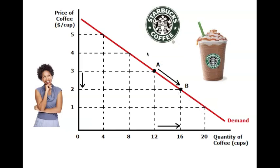To say that again: if everything remains the same in her life — her income remains the same, her tastes remain the same, all the things that go into her day-to-day decision-making stay the same — then her demand for coffee will exist all along this curve.